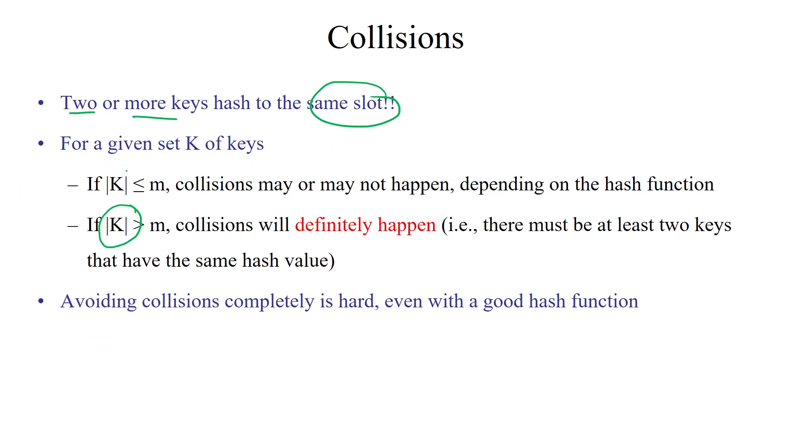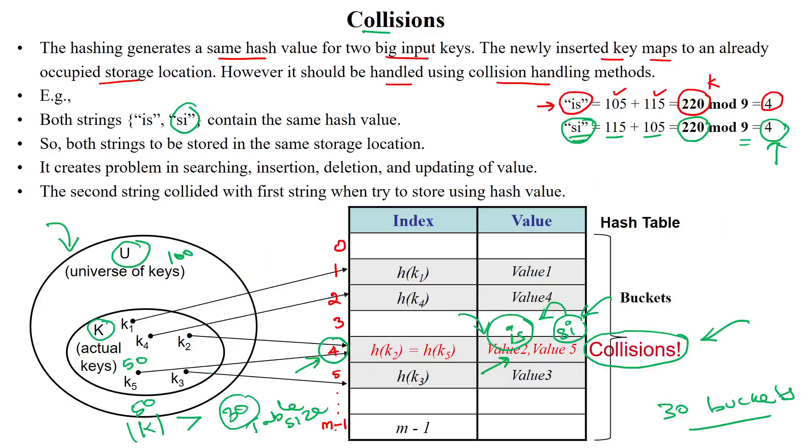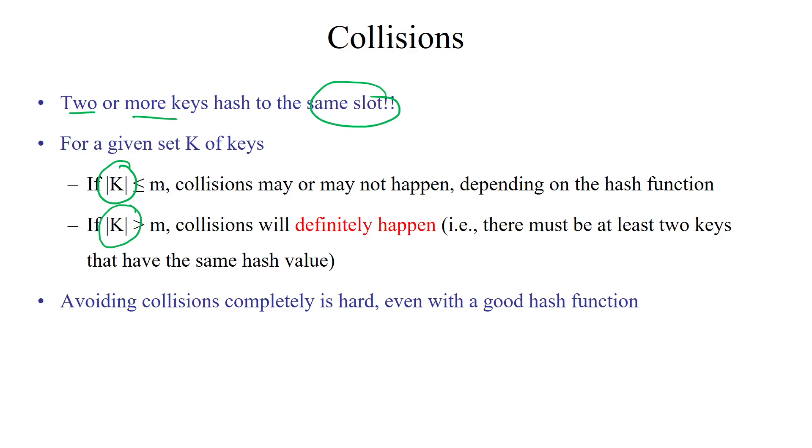But if our number of keys are less than the table size, suppose I am having 20 number of keys. Then it is able to store 20 number of keys in the size of 30 buckets in the table. So 20 slots can be easily accessed to store the values among 30 number of buckets from the hash table. In that situation, may or may not happen the collision.